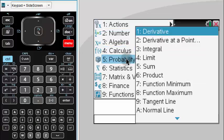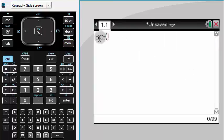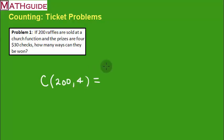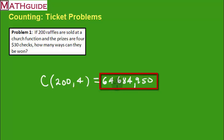For this particular calculator I go under menu, it's under probability, and it's combinations. The formula requires two numbers, so I hit 200, then comma, then four, and press enter. There's your answer. So it's 64,684,950. Believe it or not, there's almost 65 million ways to distribute those checks. Let's go on to our next problem.